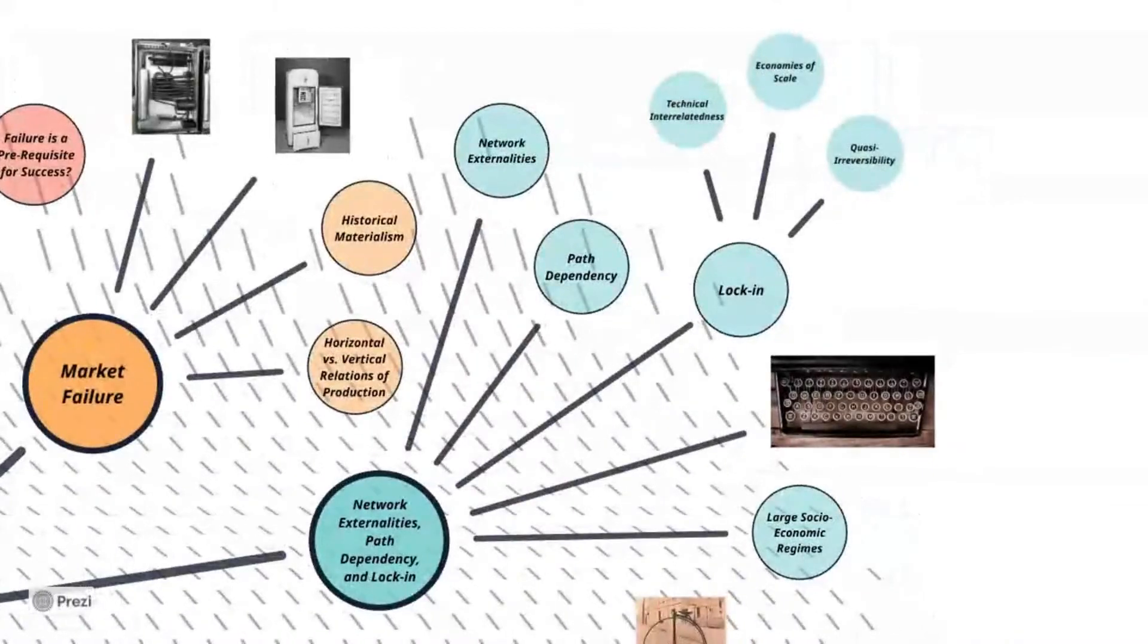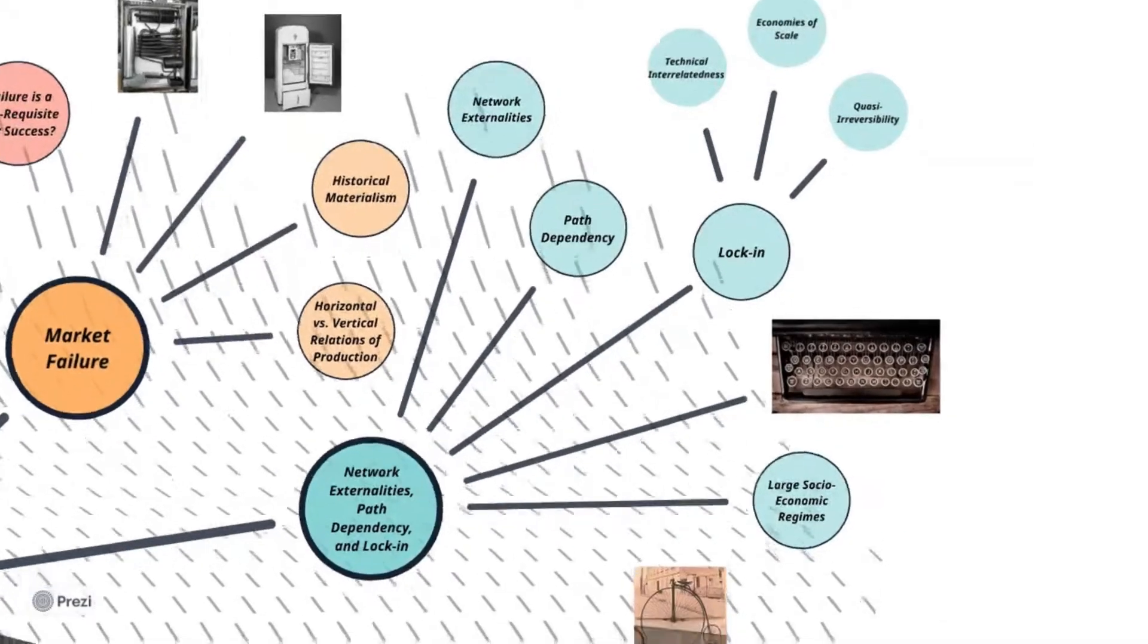Which leads into our next topic being network externalities, path dependency, and lock-in. Here we looked at the case of the QWERTY keyboard, where the market shows a standard even though there was a seemingly better alternative.